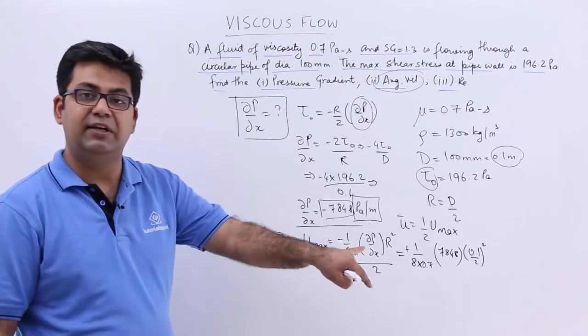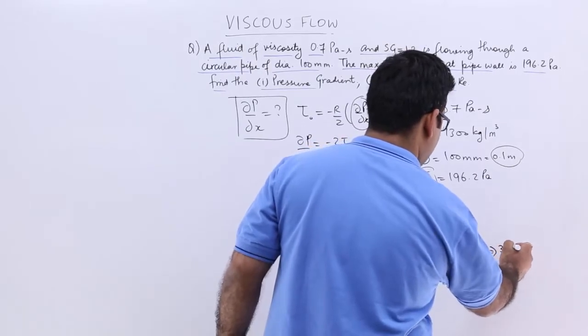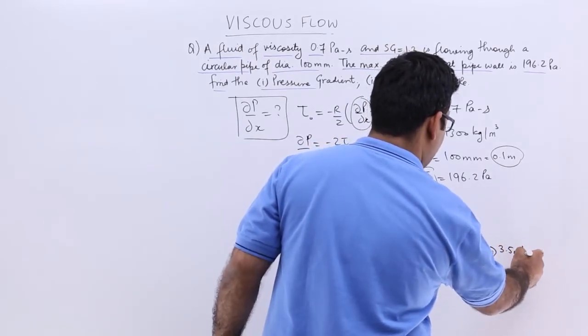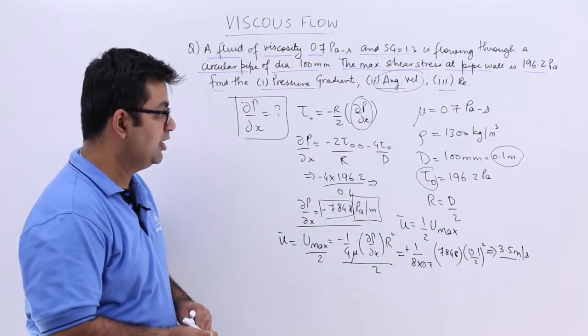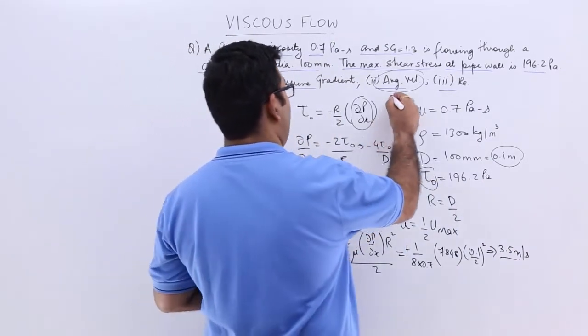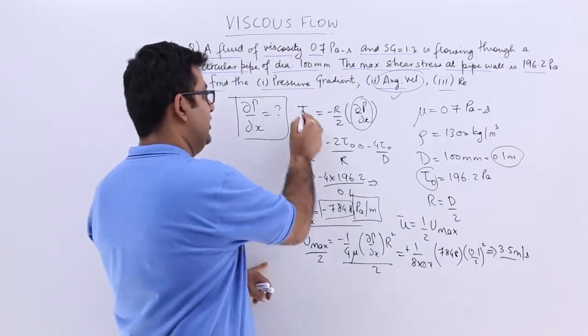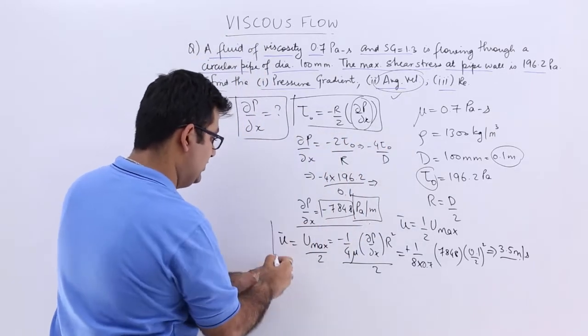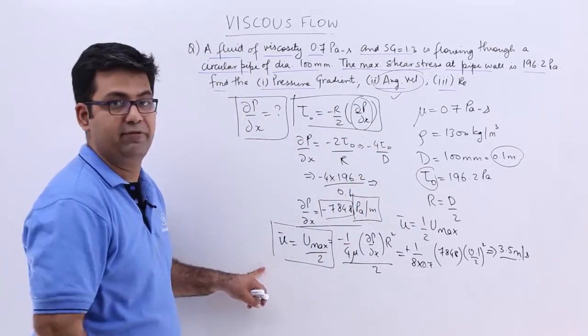So when you calculate this entire equation, you get the value for average velocity as 3 and a half meters per second. So we are done with the second part also that we have calculated the average velocity. Now see, all these relations, this relation, this relation, this is coming from the analysis that we did for this kind of a flow.